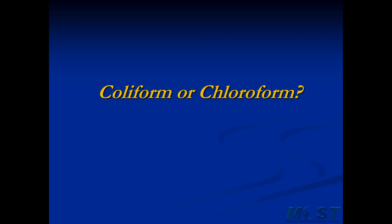Here are two words that are spelled very similarly and sound even more similar, but mean two very different things: coliform and chloroform. Coliform is a form of bacteria — the one that we check when looking for pathogen presence in the water. Chloroform is a disinfection byproduct. So they're not related to one another at all, even though they sound and are spelled fairly similarly.